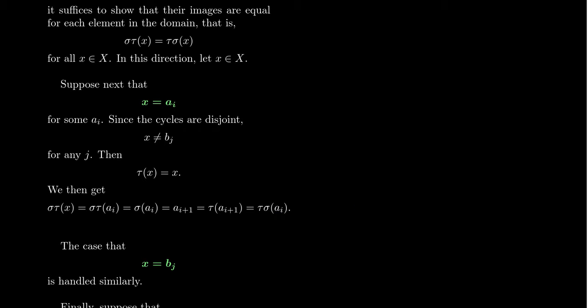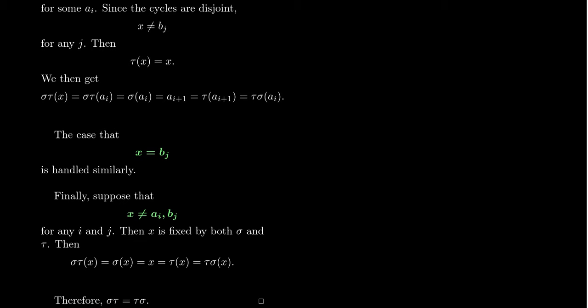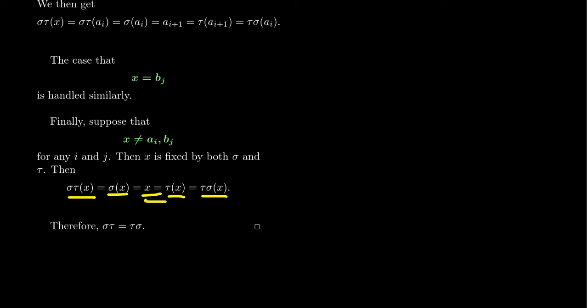If x = bⱼ, the same argument applies: sigma fixes bⱼ, so sigma tau(bⱼ) = tau(bⱼ) = bⱼ₊₁, reducing mod l. And tau sigma(bⱼ): sigma fixes bⱼ, then tau sends it to bⱼ₊₁ — the same result. If x is neither an a nor a b, both sigma and tau fix x, so sigma tau(x) = x = tau sigma(x). In all three cases sigma tau(x) = tau sigma(x), proving disjoint cycles always commute.